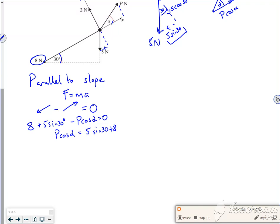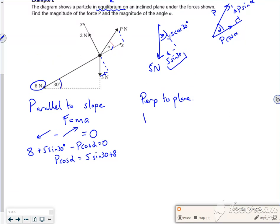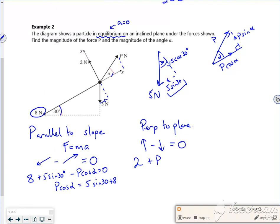So now let's look perpendicular to the plane. So what I'm saying is, my forces going that way perpendicular to it, minus my forces going that way perpendicular to it, are also equal to zero because it's in equilibrium. So what have I got going up? So I've got the 2 Newtons going up. I've got the P sin alpha going up. What have I got going down, perpendicular to it, is a 5 cos 30. And that's equal to zero.